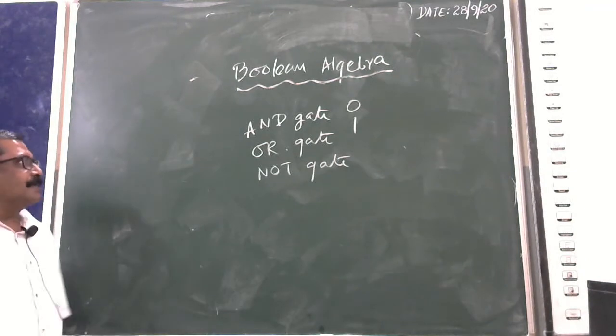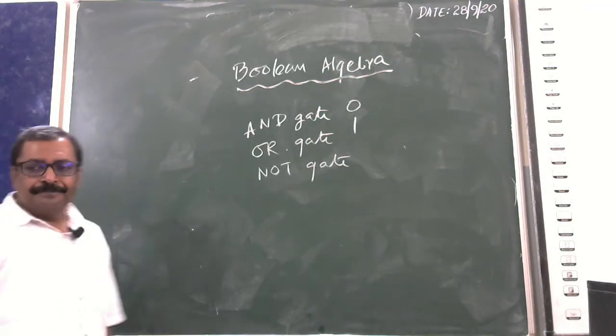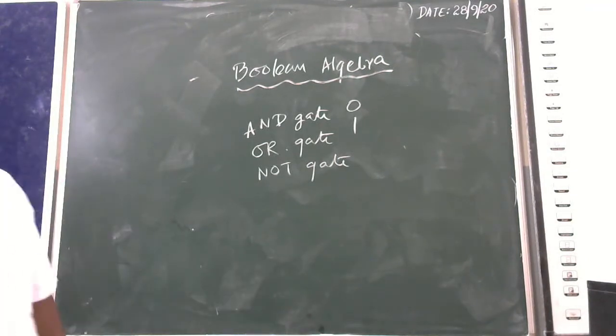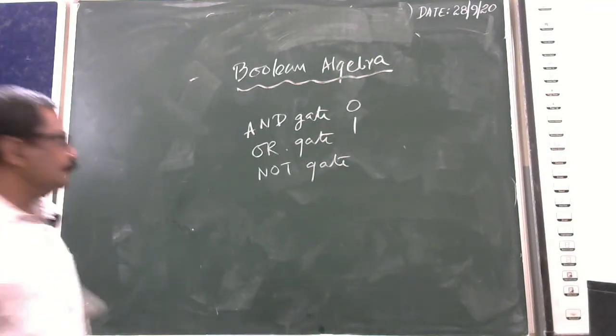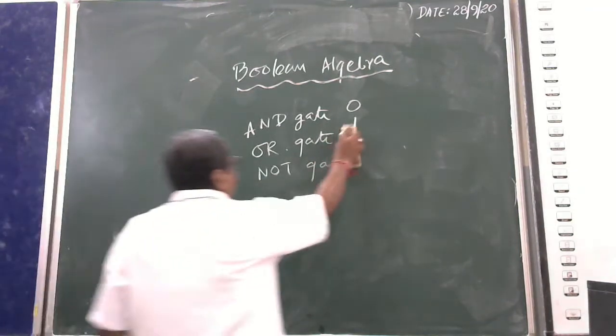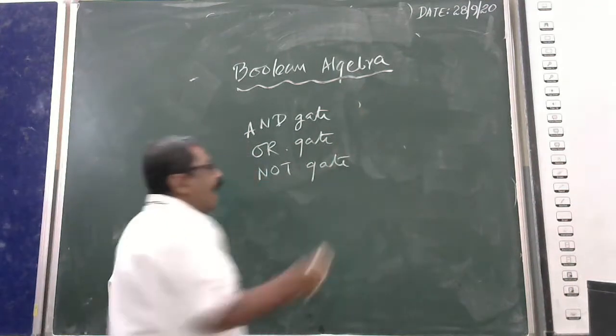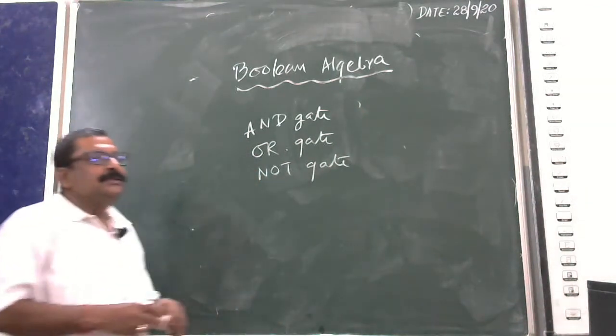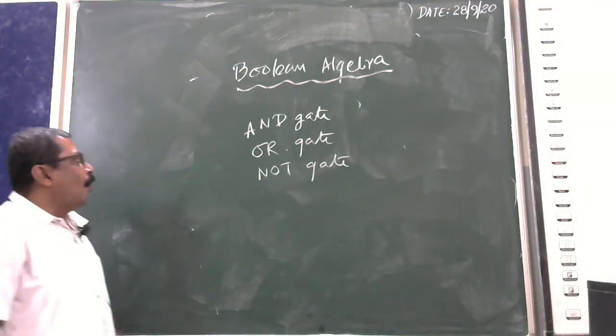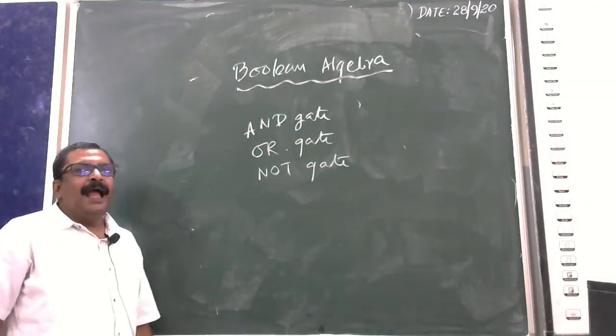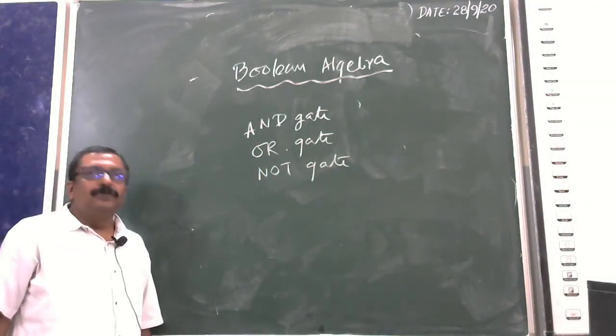The three basic gates are: AND gate, OR gate, and NOT gate.